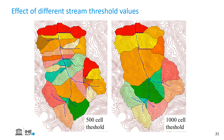To determine this threshold value is a bit difficult, and it needs a bit of trial and error. There is no rule of thumb, and it depends on other properties of your catchment. Here on the left we see the example if we have 500 units as a threshold, and on the right side 1000. If we make the threshold lower, it results in more tributaries and subcatchments than if we make it higher.